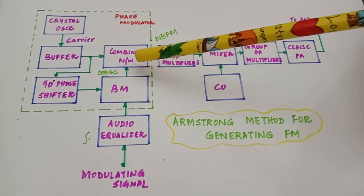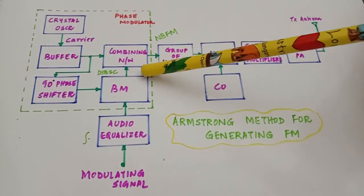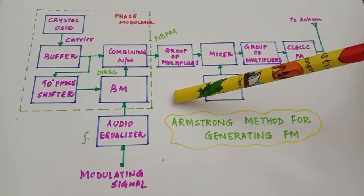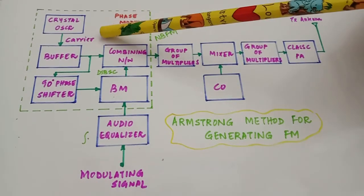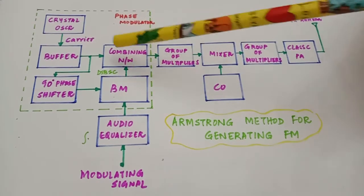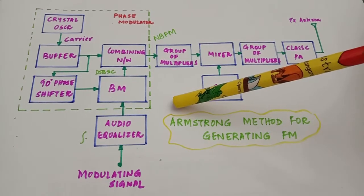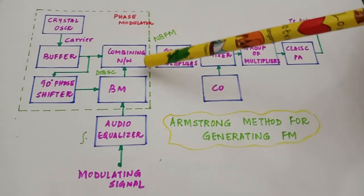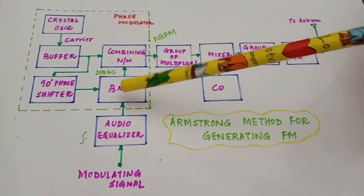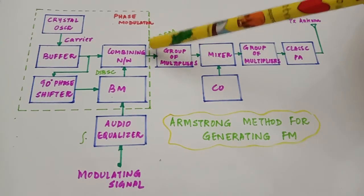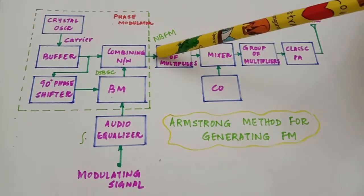The advantage of the indirect method — why we say the Armstrong method produces more stable FM — is that we are able to use a crystal oscillator for generating the carrier signals. That is why the indirect method is preferred over direct methods in commercial FM transmitters. We shall now look into the phasor diagram and see that the output from the combining network is a phase modulated output.